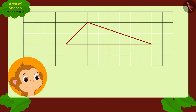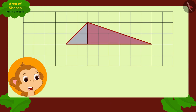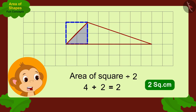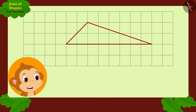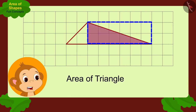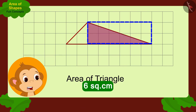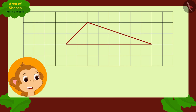Thinking this, Babban got happy. First I will find the area of this part of the box. I can divide this area into two triangles. The area of this small triangle is half of the area of this square, or two square centimeters. And the area of this big triangle is half of the area of this rectangle, or six square centimeters.